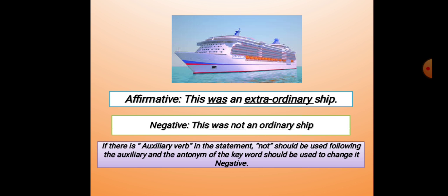Now you see this one: 'This was an extraordinary ship.' The negative form is 'This was not an ordinary ship.' If there is an auxiliary verb, 'not' should be used following the auxiliary and the antonym of the keyword should be used to change it to negative.